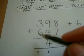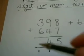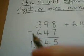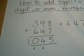3 and 6 is 9. Add this 1 is 10. This time, I put the whole of the 10 in because we're at the end of the calculation. The answer is 1045.